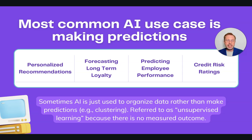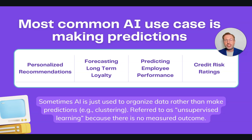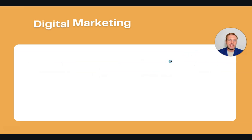The most common AI use case is making predictions, and there are different types: personalized recommendations, forecasting long-term loyalty, predicting employee performance, and credit risk ratings. Sometimes AI is just used to organize data rather than make predictions — for example, using cluster analysis for customer segmentation. This is referred to as unsupervised learning because there's no measured outcome that the system can optimize against.